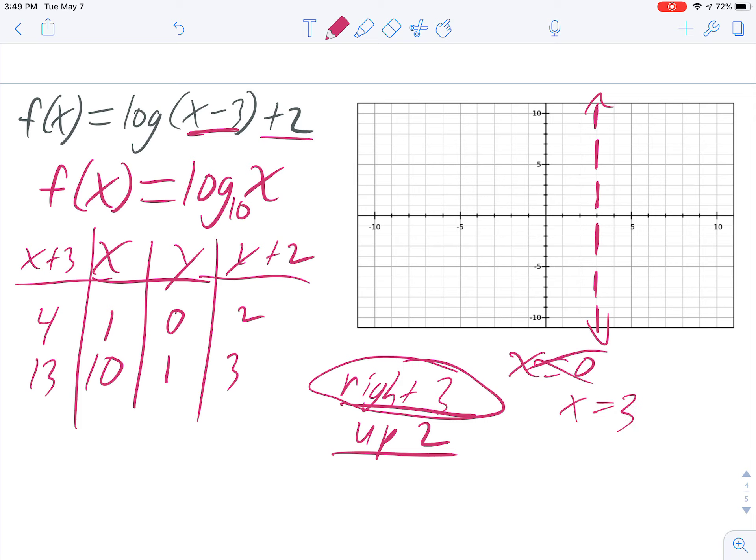My first critical point is at 4, 2, which is right there. My next one is at 13, 3, which is slightly off the graph, but it's around there. And so we're going to get our log curve, which looks something like that, which is an inverted exponential.